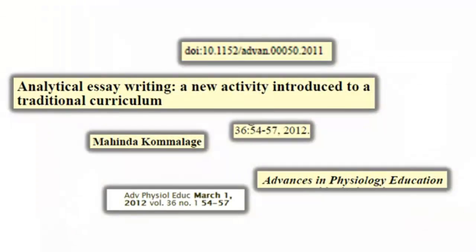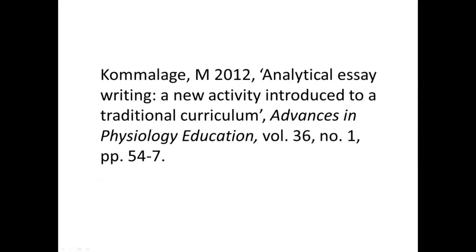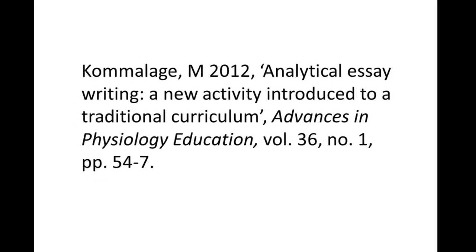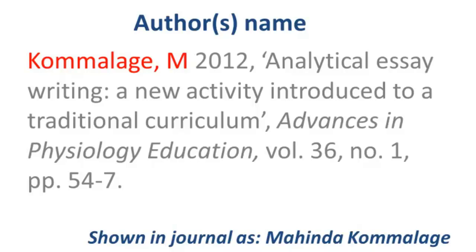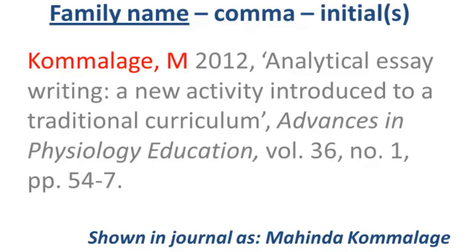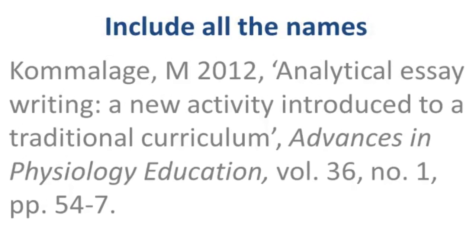Once you have found these details, you will need to format them in a specific way. Author — this is the author of the article. Use the family name with only the first letter capitalised, comma, initial, space. When you have more than one author, you need to include all of the names.